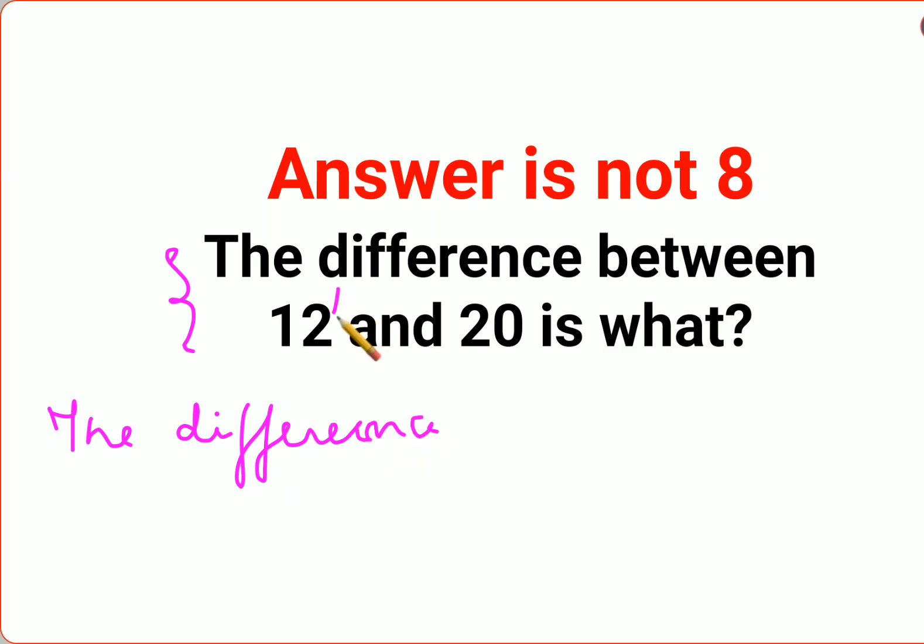The difference between a and b, if you had to calculate, it would be a minus b. This is not going to be b minus a. A lot of people made the mistake of making this as 20 minus 12, which is absolutely incorrect.